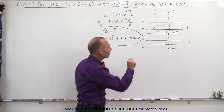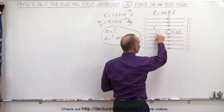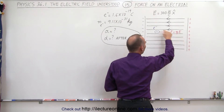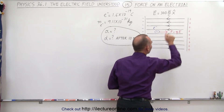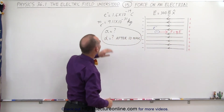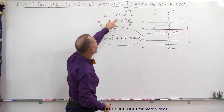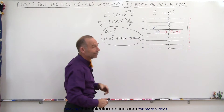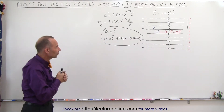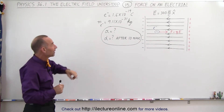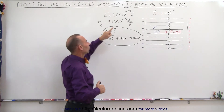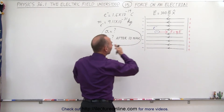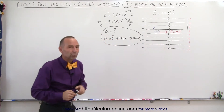If we now place an electron between the plates, that electron will experience a force to the right towards the positive charge, equal to the charge of the electron times the strength of the electric field. The charge of the electron is 1.6 times 10 to the minus 19 coulombs, and the mass of an electron is 9.11 times 10 to the minus 31 kilograms. What we're trying to find out is what will be the acceleration on the electron, and after 10 nanoseconds, how far will the electron have traveled between those two plates.